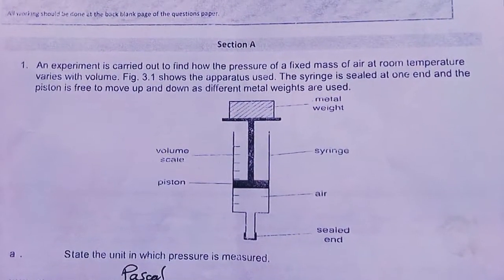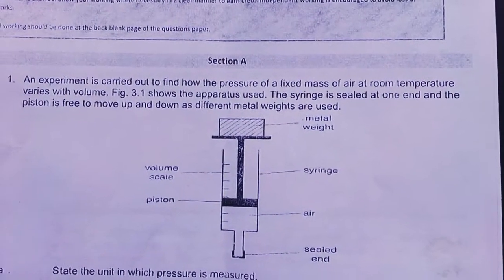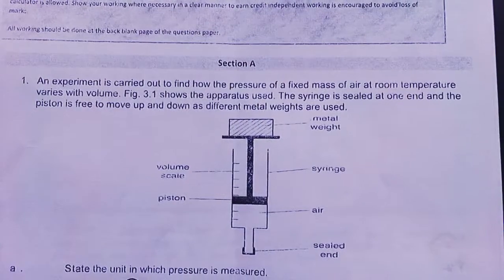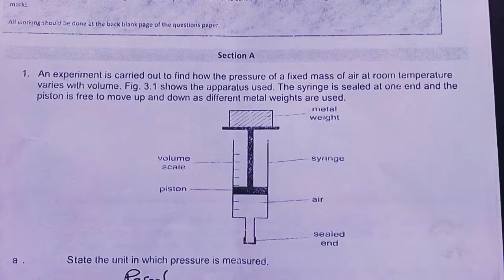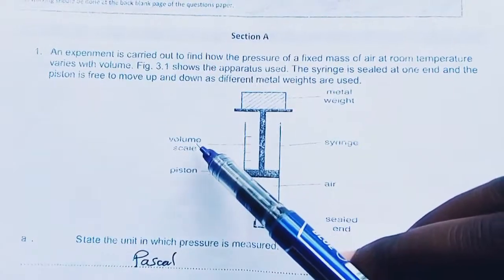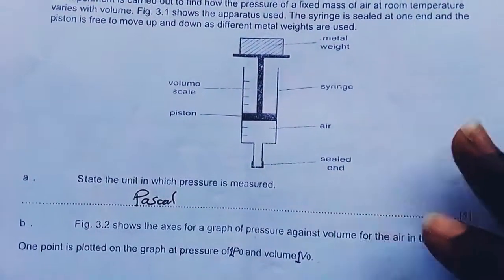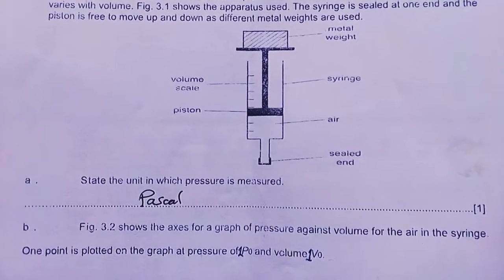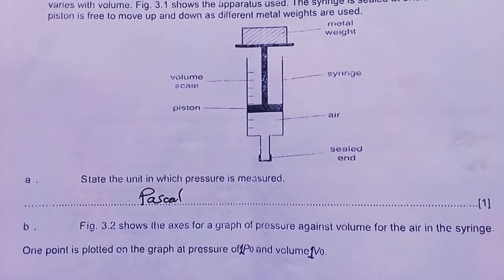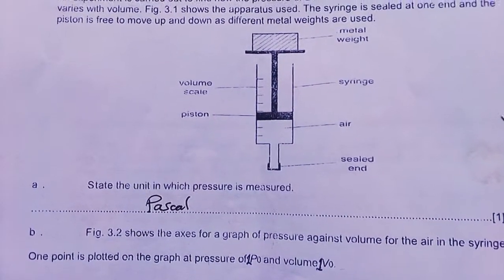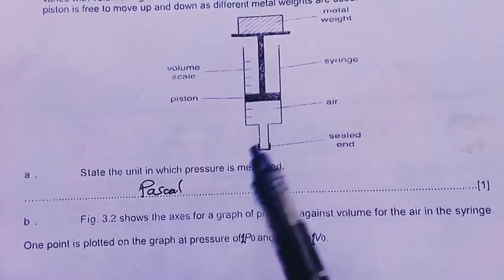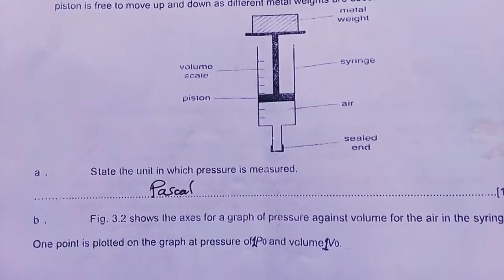An experiment is carried out to find how the pressure of a fixed mass of air at room temperature varies with volume. The figure shows the apparatus used. The syringe is sealed at one end and the piston is free to move up and down as different metal weights are used. State the unit in which pressure is measured. You should take note that the unit and the symbol are two different things. So the unit is Pascal. The alternative is Newton per meter squared. We write the word itself, the unit itself.